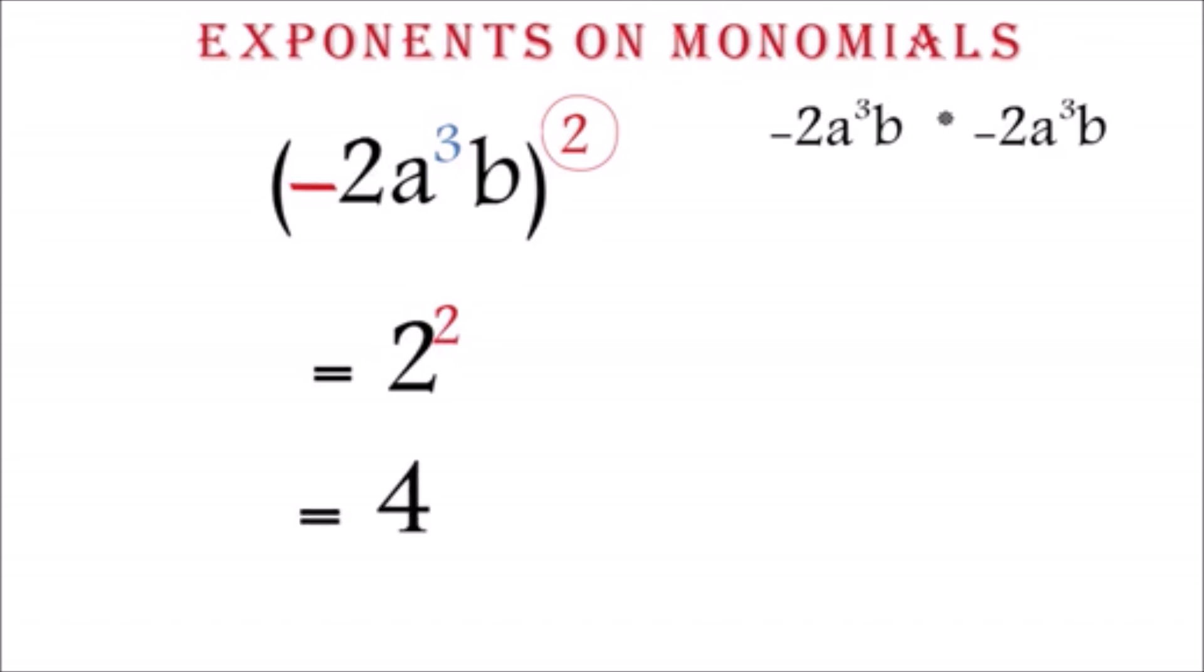Next, we will multiply the exponent of each letter by the 2. So, we have a exponent 3 by 2 to get a exponent 6. Then, we have b exponent 1 times 2. This gives us b exponent 2. Our final answer is therefore, 4a exponent 6, b exponent 2.